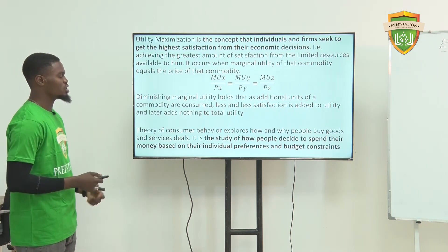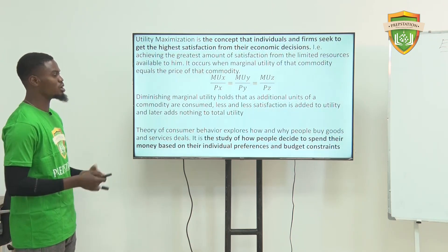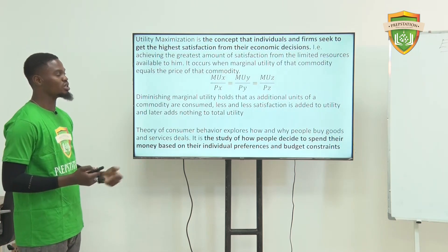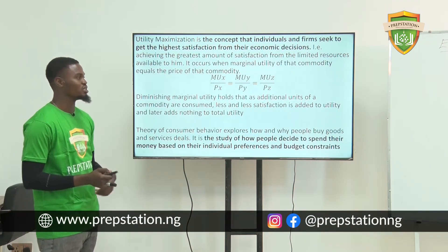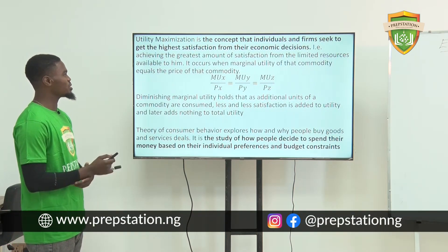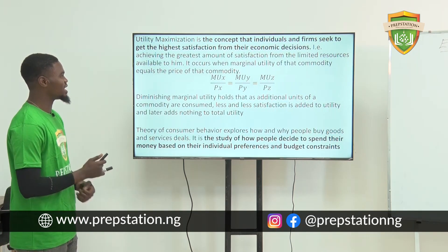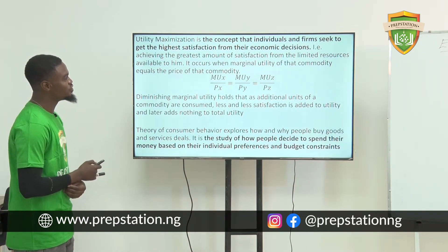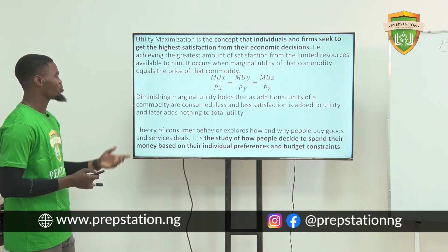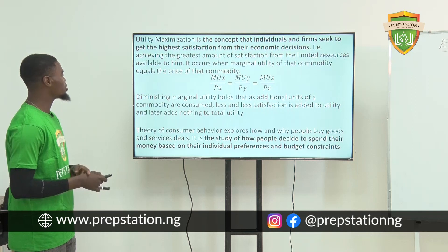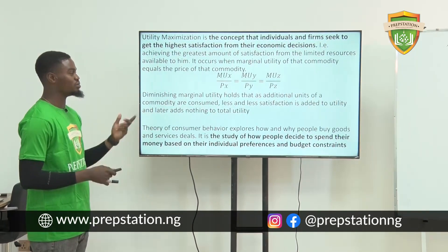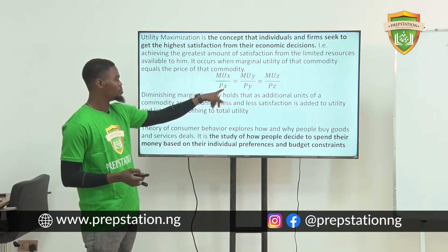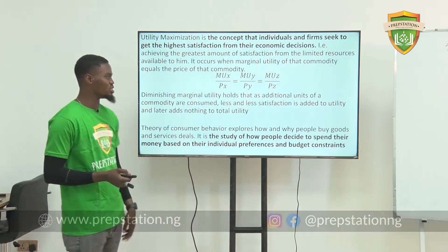Then we go to utility maximization. Utility maximization has to do with a condition whereby a consumer gets the best from consuming a particular commodity given their level of income. It is the concept that individuals seek to get the highest satisfaction from their economic decisions, achieving the greatest amount of satisfaction from the limited resources available. It occurs when the marginal utility of that commodity equals the price, shown as MUx over Px equals MUy over Py equals MUz over Pz.